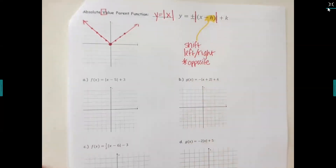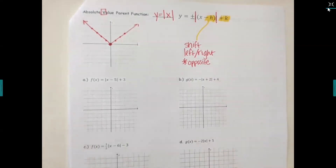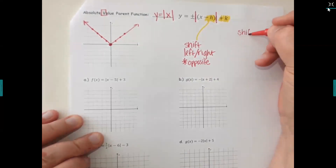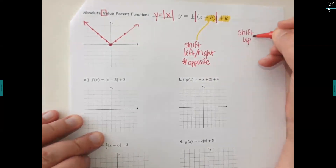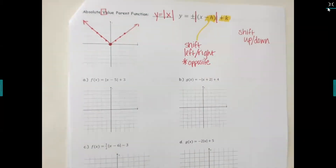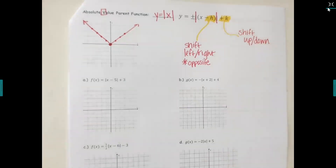Normally if it's a plus I'd go right, but in this case I go left because it's with x inside the bars. Your number at the back — outside the bars — is going to shift the graph up or down. Because it is not in the bars, you do whatever it says: plus goes up, minus goes down. That one is not an opposite.